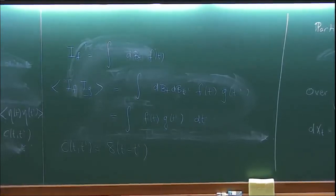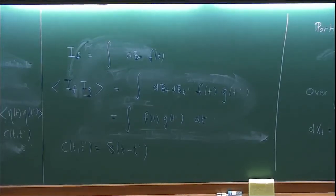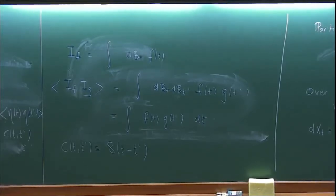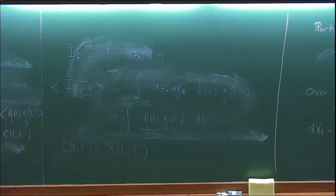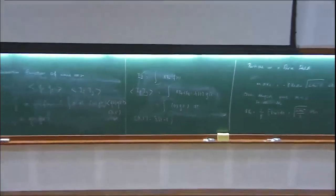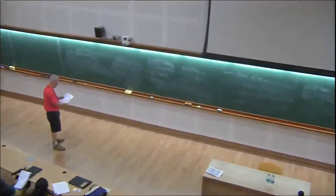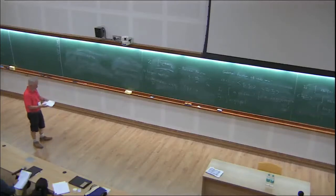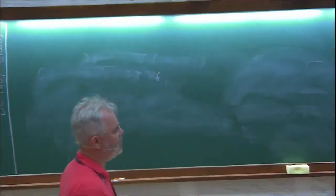White noise has a flat spectral density. When writing the Langevin equation, you have to remember how you define the noise and its correlation function — you haven't gotten rid of Ito-Stratonovich differences just by dividing by dt. That was a crash course on stochastic differential equations and the Ito calculus.